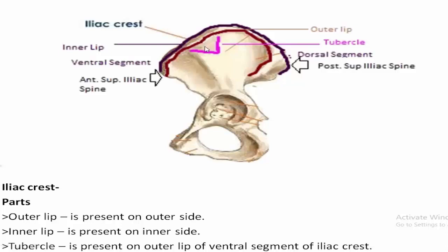This is one more side determination point: the tubercle is always on the lateral side and always on the outer side — specifically on the outer lip of the ventral segment of the iliac crest.